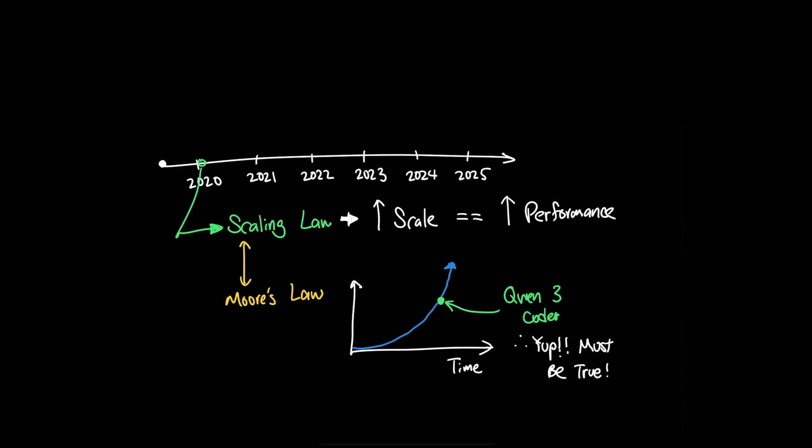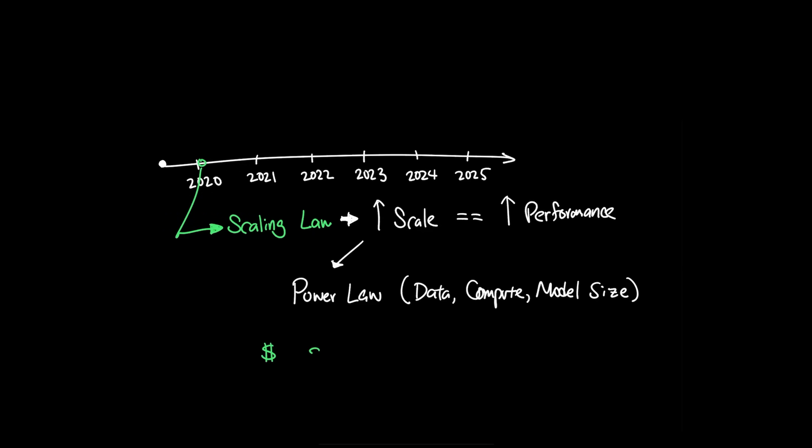Although Moore's Law is rather an observation of how fast technology advances, Scaling Law proposed a power law between these variables, which gave the industry the go ahead in funding to take the existing architecture and scale them up to get better performance. Until it didn't.